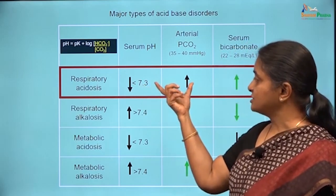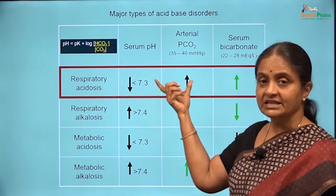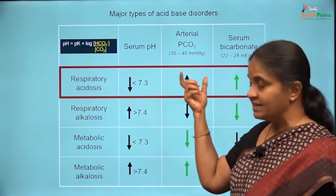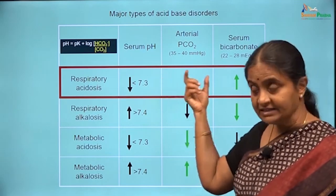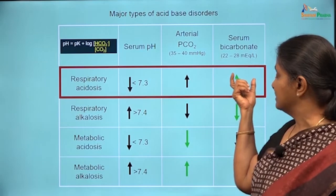Respiratory Acidosis can be compensated for, temporarily at least, by the kidneys.